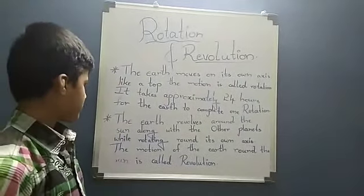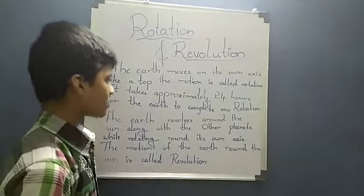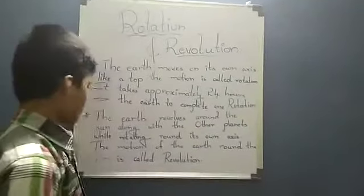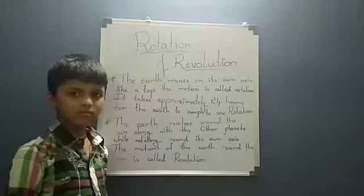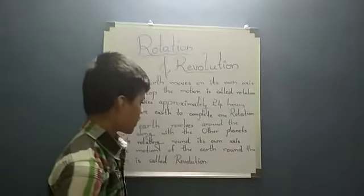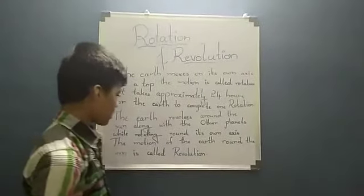The earth revolves around the sun along with the other planets while rotating around its own axis. The motion of the earth around the sun is called revolution.